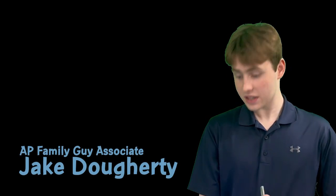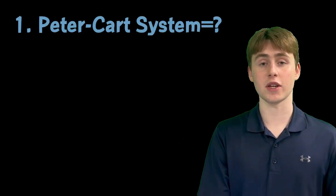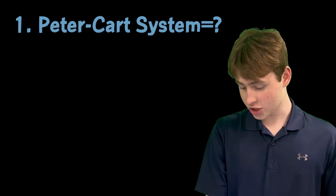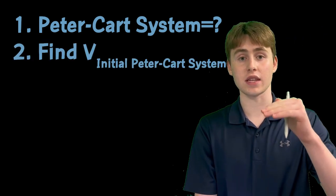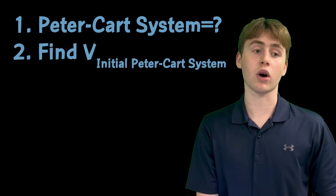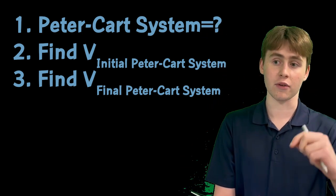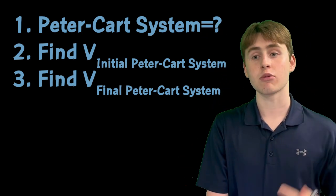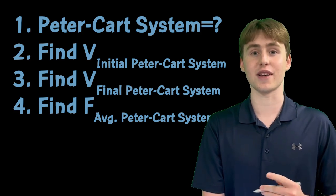So the final value we need to calculate is the average force exerted on Peter after the collision. To do this, there are a couple of components we need to find. First, we need to quantify Peter and the shopping cart as a system. Second, we need to quantify the velocity of Peter at the end of the ramp. Third, we need to quantify Peter's velocity right before he hits the ground. Then, using all of that, we can finally calculate the average amount of newtons. Let's do this.